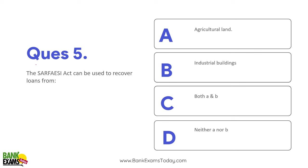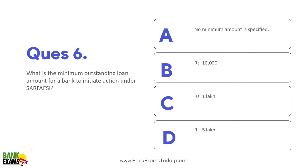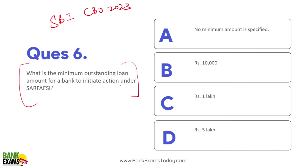The SARFAESI Act can be used to recover loans from industrial buildings but not agricultural land. The minimum outstanding loan amount for a bank to initiate action under SARFAESI is ₹1 lakh. This question appeared in SBI CBO 2023 — minimum ₹1 lakh default is required to initiate action under the SARFAESI Act.